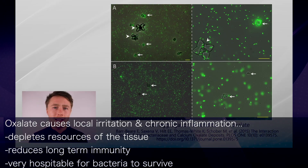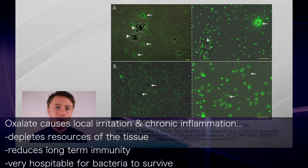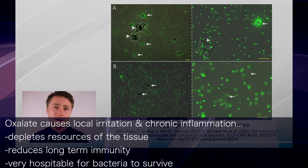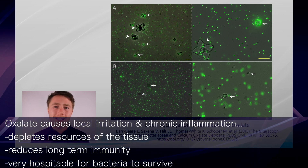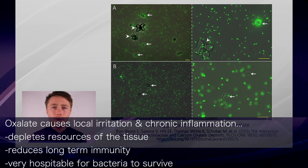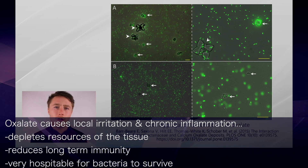Oxalate is well known to cause local irritation and inflammation, and a state of chronic inflammation is likely to deplete the resources of a tissue and reduce long-term immunity. Essentially, chronic inflammation is going to provide a more hospitable environment for certain bacteria to thrive.